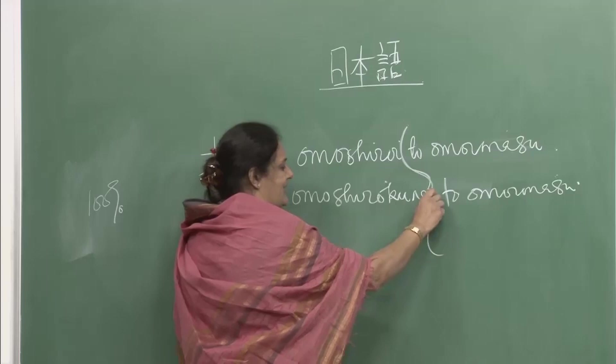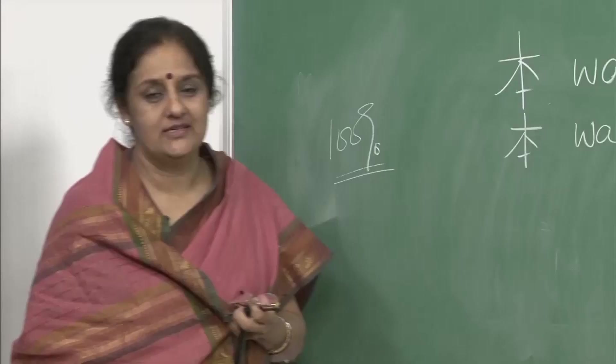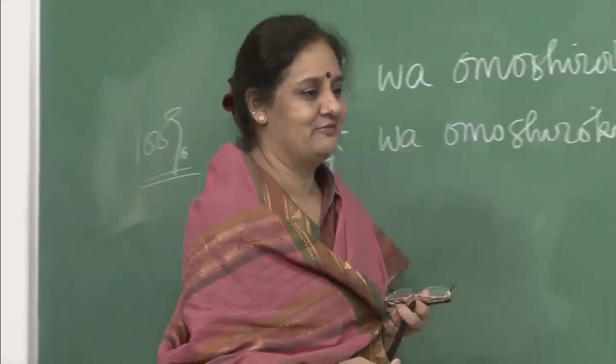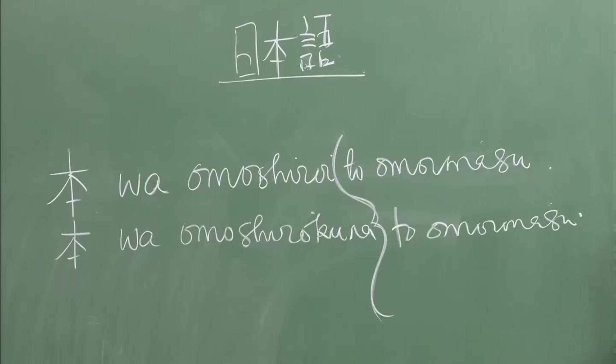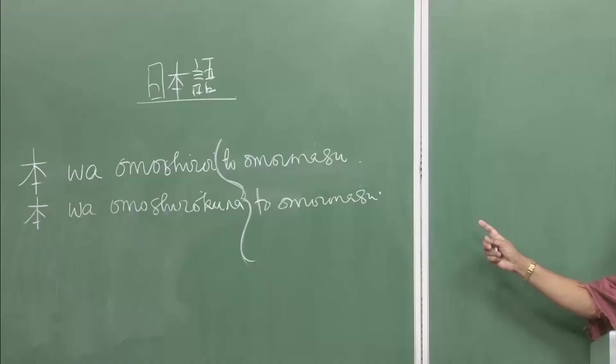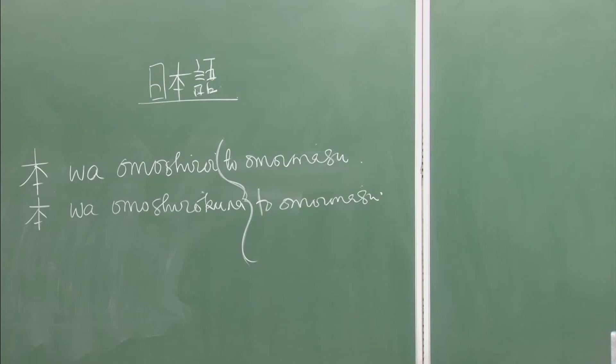This comes to about 75-85 percent certainty — you are not completely sure but to a great extent you can say the book is interesting. If you say omoshiroku nai desu — that is 100 percent — I did not find the book interesting. But if you say hon wa omoshiroku nai to omoimasu, you are softening your statement: I think that the book is not that interesting.